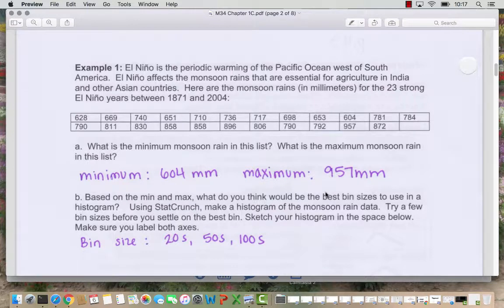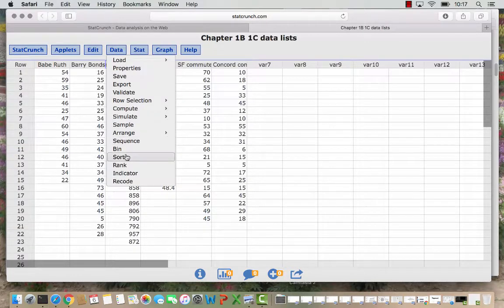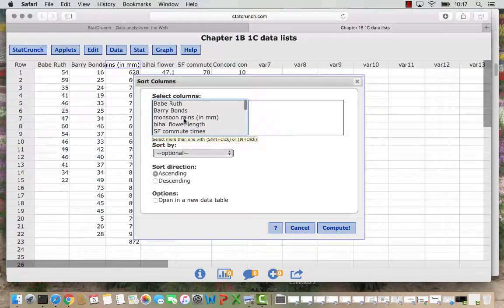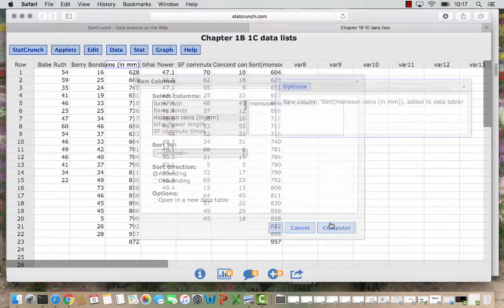So based on this knowledge, we want to think about what is the best bin size for our histograms. We could count by 20s, 50s, or 100s and those would all be reasonable. Let's go over to StatCrunch. So you can see the monsoon rain is here in this column. If we wanted to sort that, we would go to data, sort, and then you choose your column monsoon rains. I'm going to have it sort ascending from smallest to largest and compute.